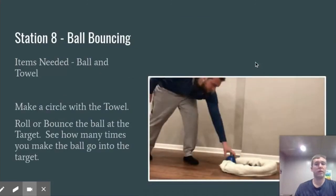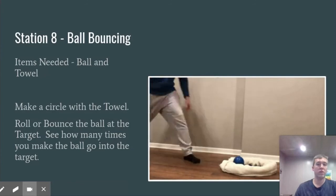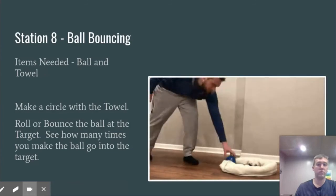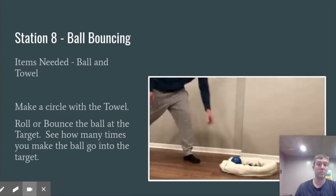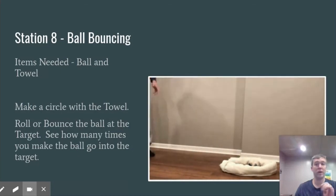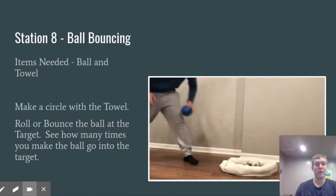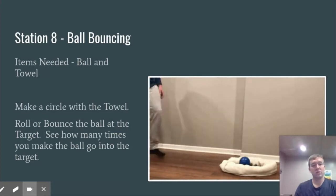One of the other stations that was really awesome was the ball bouncing station. As far as using the towel — some kiddos used the towel, some used the paper plate, and a couple of kiddos used a stuffed animal as a target to bounce the ball towards. A couple of kiddos were creative and used the paper plate as a bullseye within the towel. I thought that was pretty cool — just something else to try out.